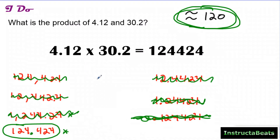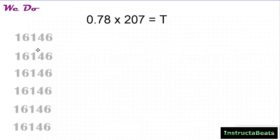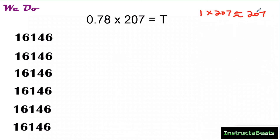Obviously you're not going to write down all the different options — I just wanted to show you what you'd be doing mentally. For our we-do problem: if you are multiplying seventy eight hundredths times two hundred seven, your answer would have the digits one, six, one, four, six — so without a decimal it'd be sixteen thousand one hundred forty six. Any time you're multiplying decimals, you should always have an estimate. In my head, I know seventy eight hundredths is pretty close to one, and anything times one is itself — identity property of multiplication — so I think my answer is going to be somewhere around two hundred seven.